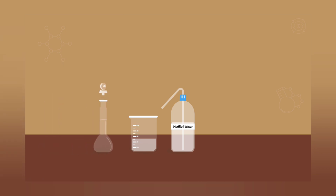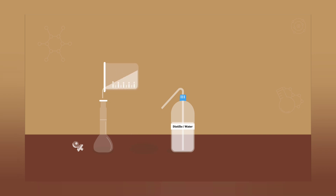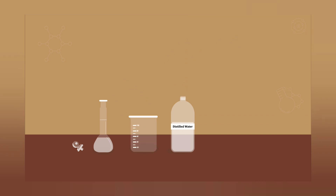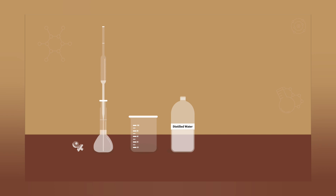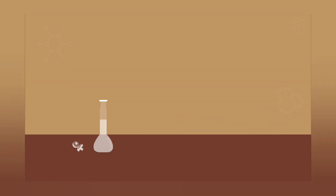In energy metabolism, glucose is the most important source of energy in all organisms. Glucose for metabolism is stored as a polymer — in plants mainly as starch and amylopectin, and in animals as glycogen. Glucose circulates in the blood of animals as blood sugar. The naturally occurring form is D-glucose.